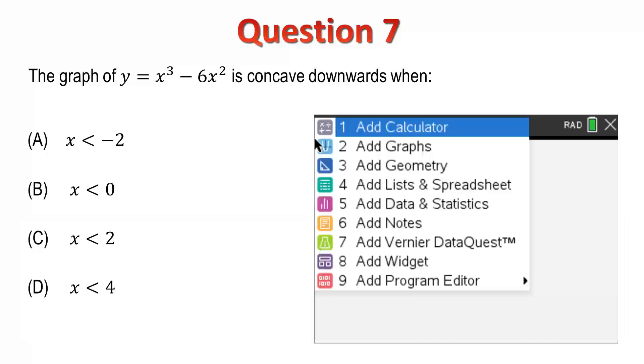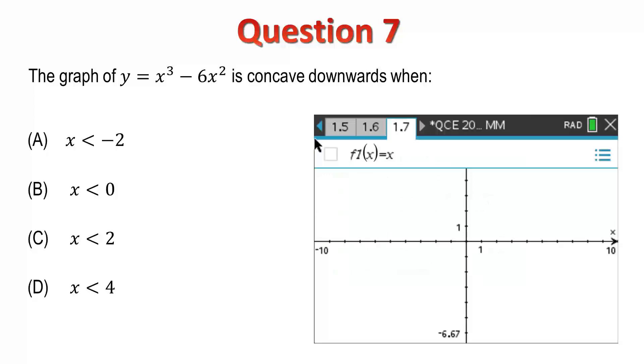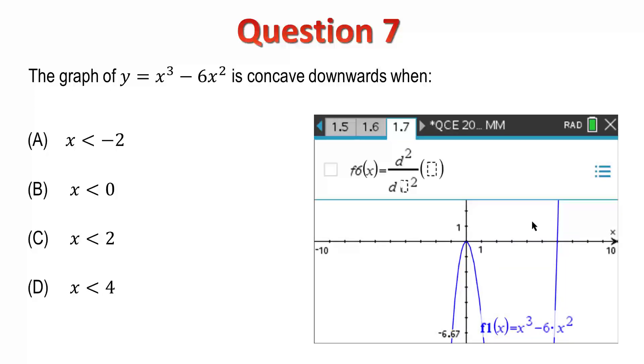I'll graph my function x cubed minus 6x squared. Note that that function is being stored in f1 of x. Now, I'll graph the second derivative. And, we see that the second derivative is negative when x is less than 2. So, my answer is C.